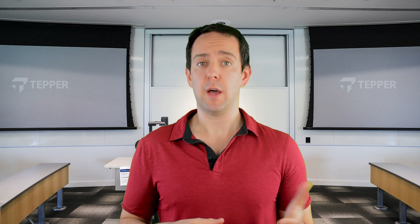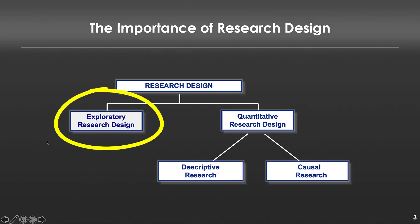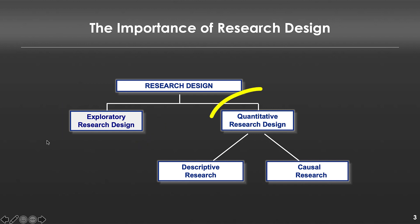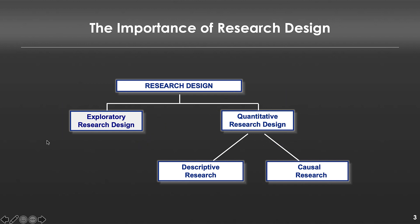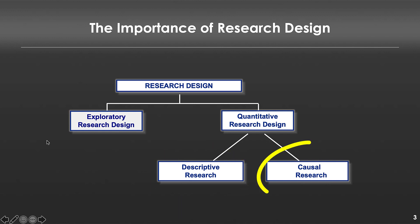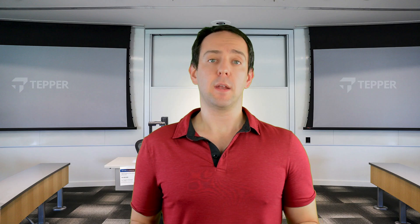In particular, we can think about research design in three different buckets. On the left-hand side, we have exploratory research, which is where we'll start. And on the right side, we have more quantitative or data-based research, and that branches into two categories: descriptive research and causal research.